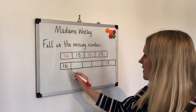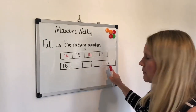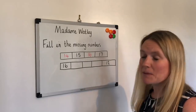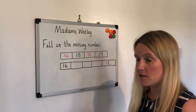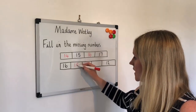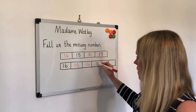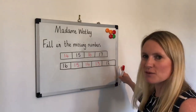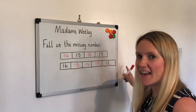This number 16 is bigger than number 12, which means the numbers must be getting smaller. So we're going to count backwards: 16, 15, 14, 13, 12. What number would go there? That's right, it would be 11.